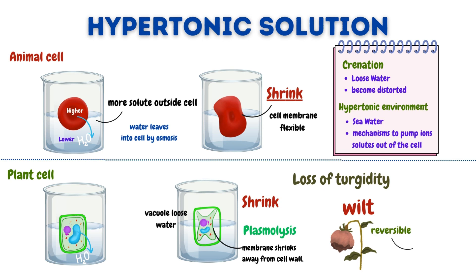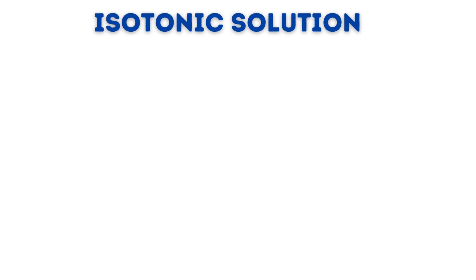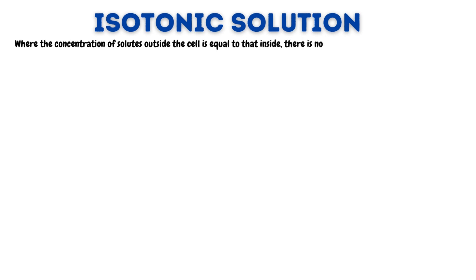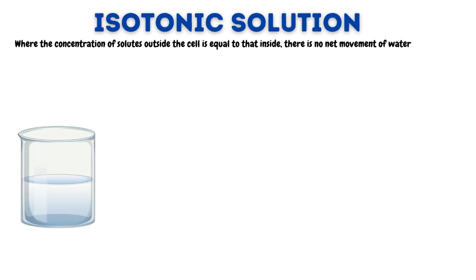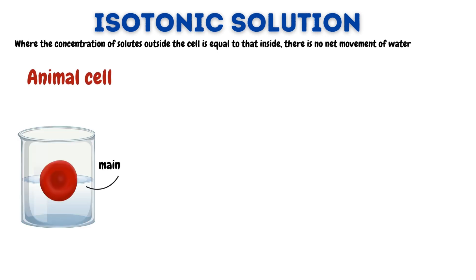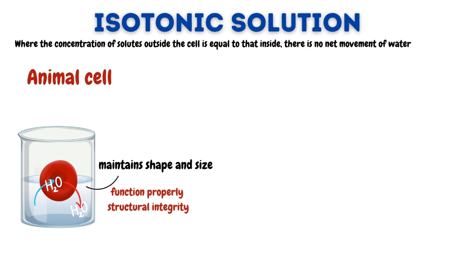The shrinking of the cell membrane away from the cell wall is known as plasmolysis. Plasmolysis is reversible if the cell is placed back in a hypotonic solution, allowing water to re-enter the cell and the cell to regain its turgidity. Now let's discuss isotonic solution, where the concentration of solutes outside the cell is equal to that of inside, so there is no net movement of water. In an isotonic solution, the animal cell maintains its shape and size, with water molecules moving in and out at equal rates. This balance is crucial for the cell to function properly and maintain its structural integrity.